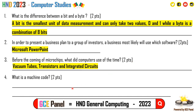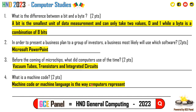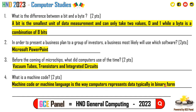Section B, Question 4: What is machine code? Machine code, or machine language, is the way computers represent data, typically in binary form. Two points.